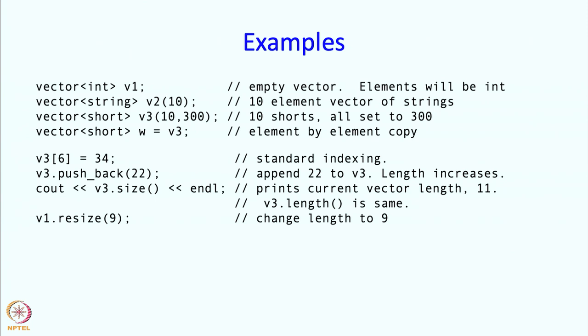I can change the length. This says change the length to 9. Originally v1 had 0 length, so this is going to make the length be 9. This is going to change the length of v2. Remember v2 was a vector of length 10. All the elements were empty. So this is going to have now a length of 15. The new values will be initialized to a string consisting of 2 stars.